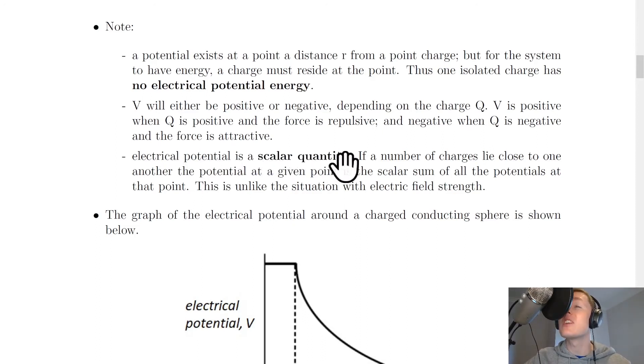Lastly, electrical potential is a scalar quantity like we said earlier. If a number of charges lie close to one another, the potential at a given point is the scalar sum of all the potentials at that point. This is unlike the situation with electric field strength. So if you have several charges near each other and you're calculating the electrical potential at a point due to those charges separately, then you need to add them together as a scalar sum rather than as vector quantities.